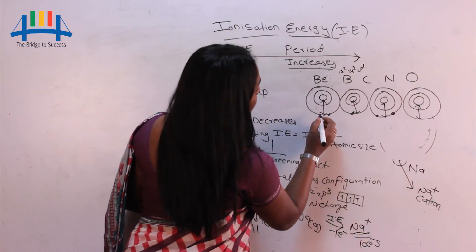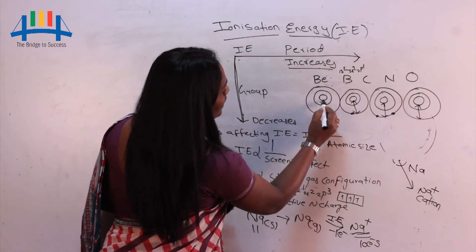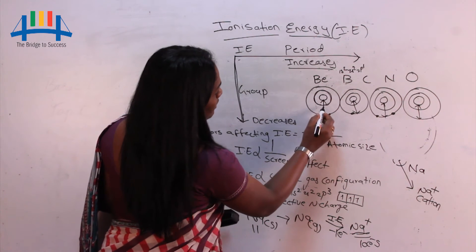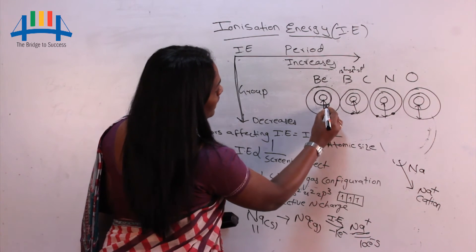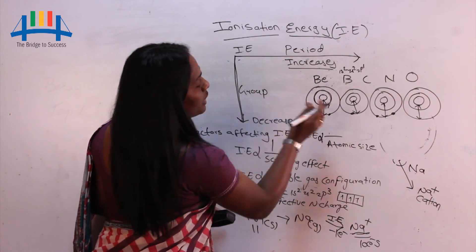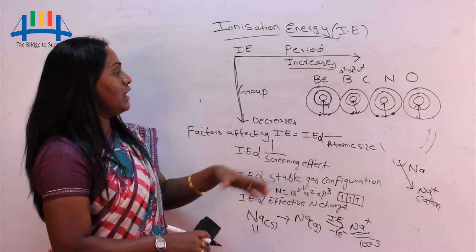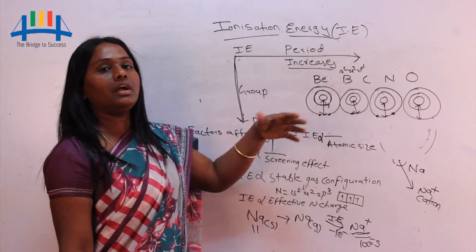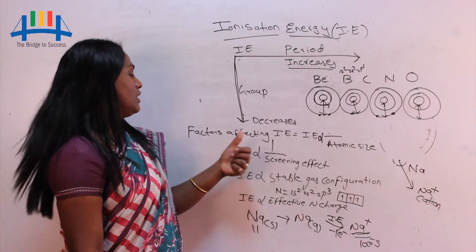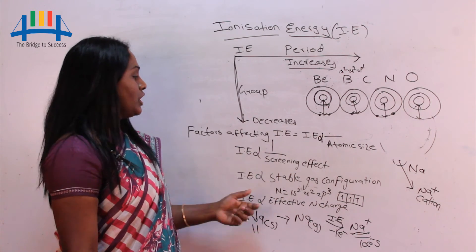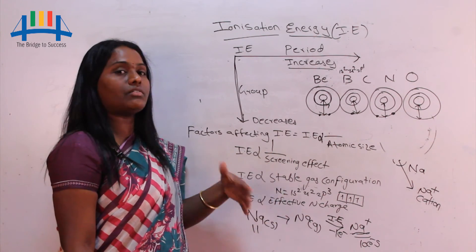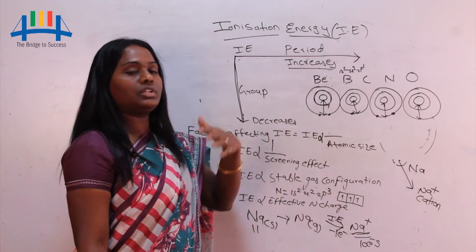Another factor is the screening effect. Screening effect means the innermost shell covers or screens the outer shell from the nucleus. When there is more screening effect, there will be less attraction, so we can more easily remove the electron. That's why more screening effect leads to less ionization energy — ionization energy is inversely proportional to the screening effect.